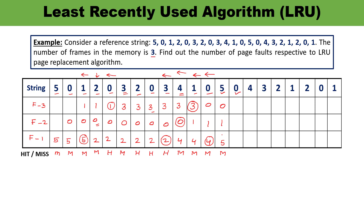Next digit is 0 — 0 is available, so this is the condition of hit. No replacement. Next is 4. 4 is not available — condition of miss. The least recently used before 4 was 0, then 5, so 1 will be replaced by 4. Frames become 4, 0, 5. Next is 3. 3 is not available — condition of miss. Before 3 was 4, before 4 was 0, so 5 will be replaced by 3. Frames are now 4, 0, 3.